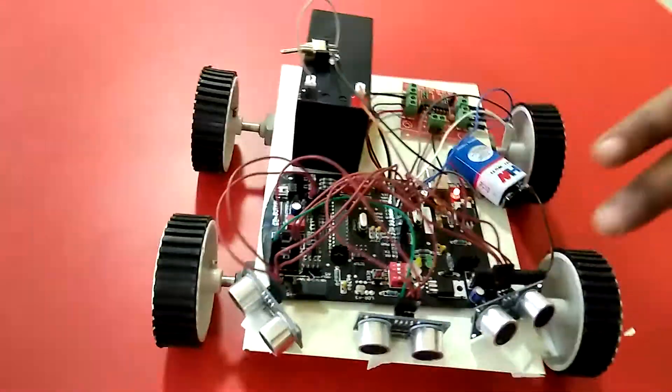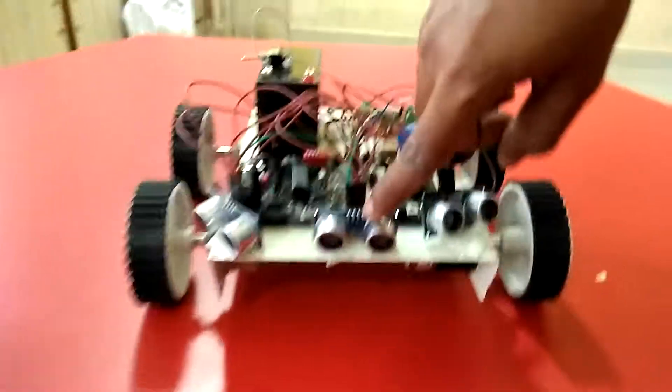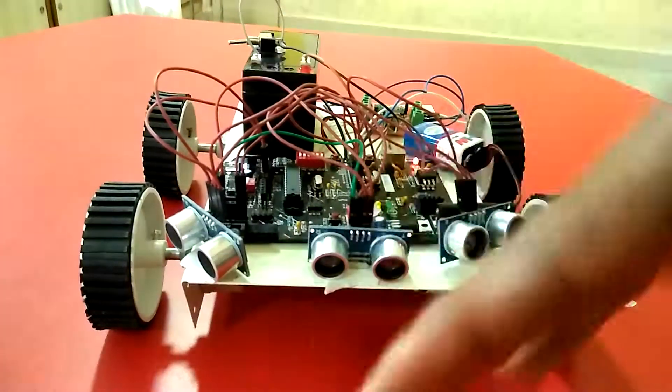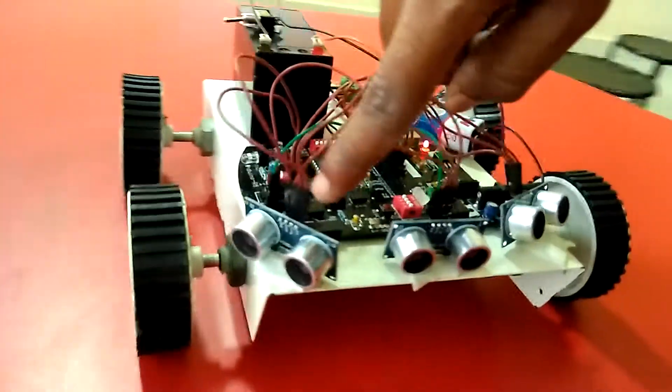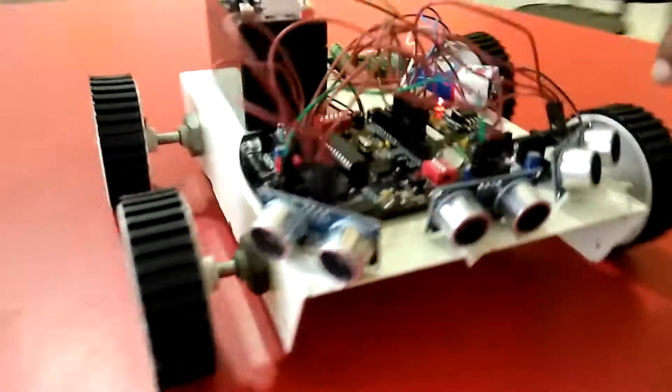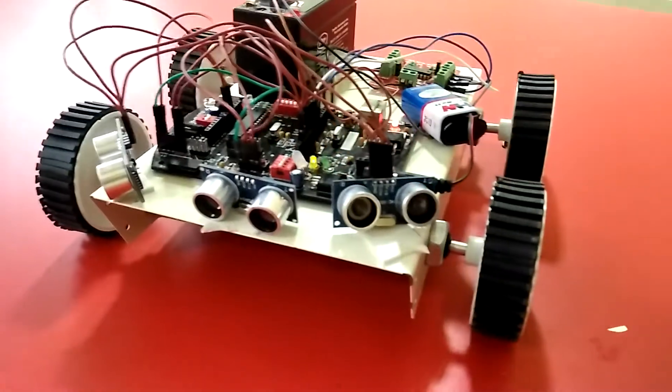Here I am using 3 ultrasonic sensors to find the barriers in all directions. For example, this ultrasonic sensor will find the barrier in front of it. If it finds any barrier in front of it, then it will go backward. And then if this ultrasonic sensor finds any barrier, then it will take left. And if this one finds any barrier, then it will take right.